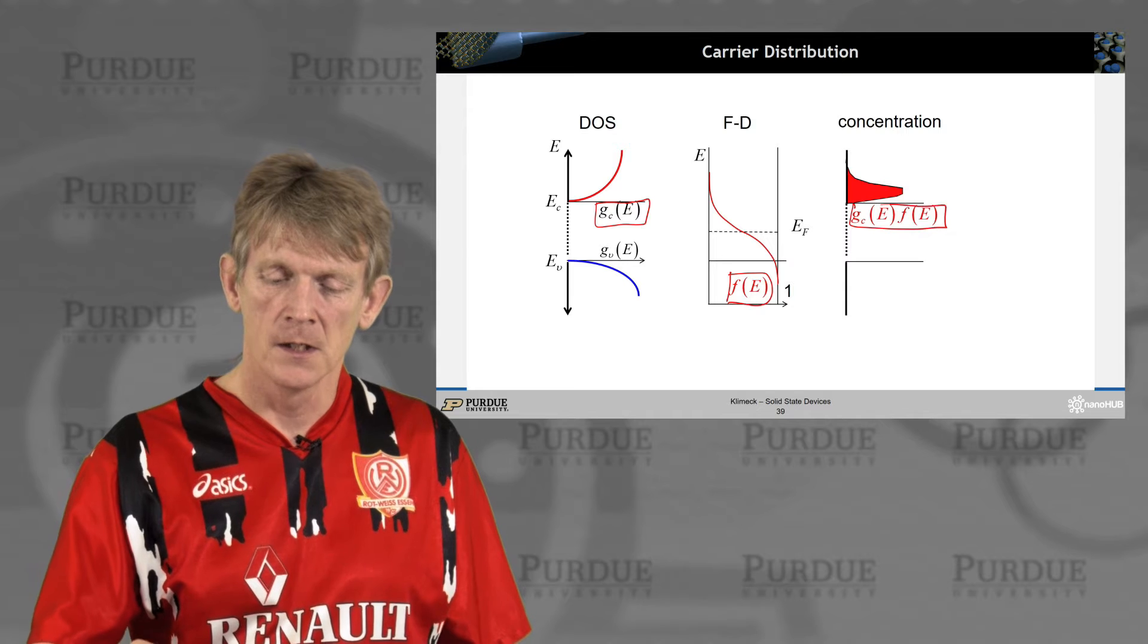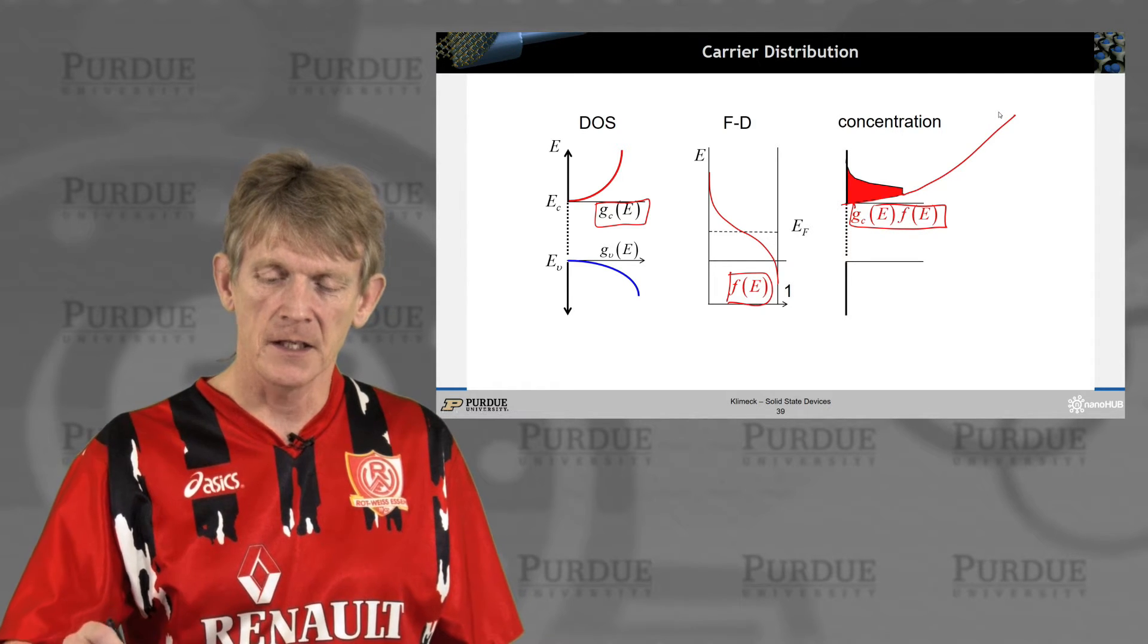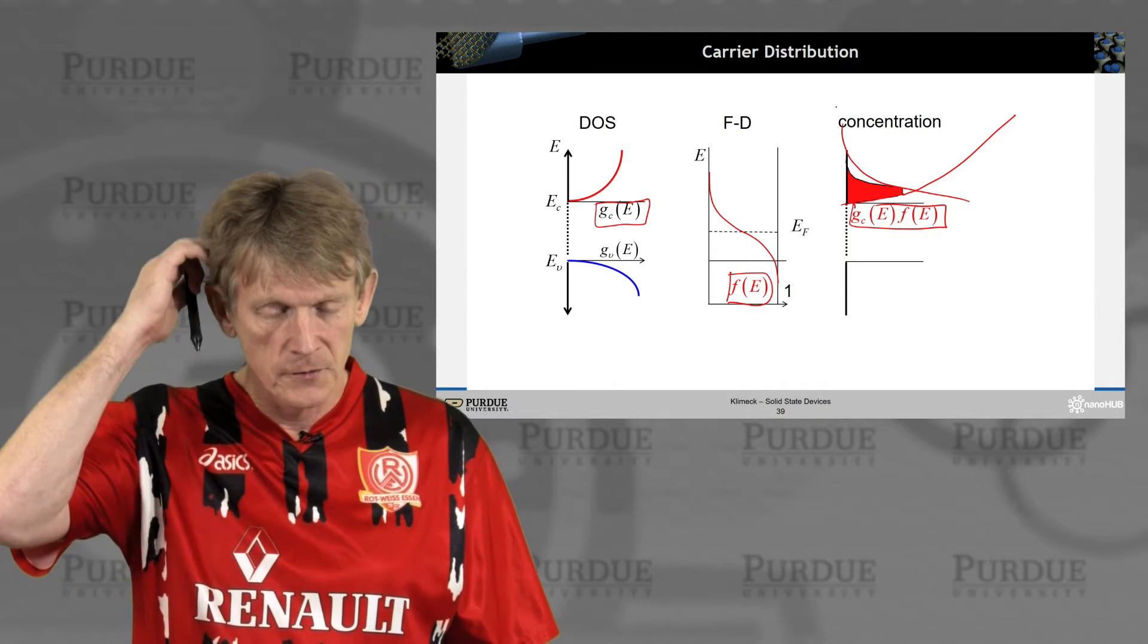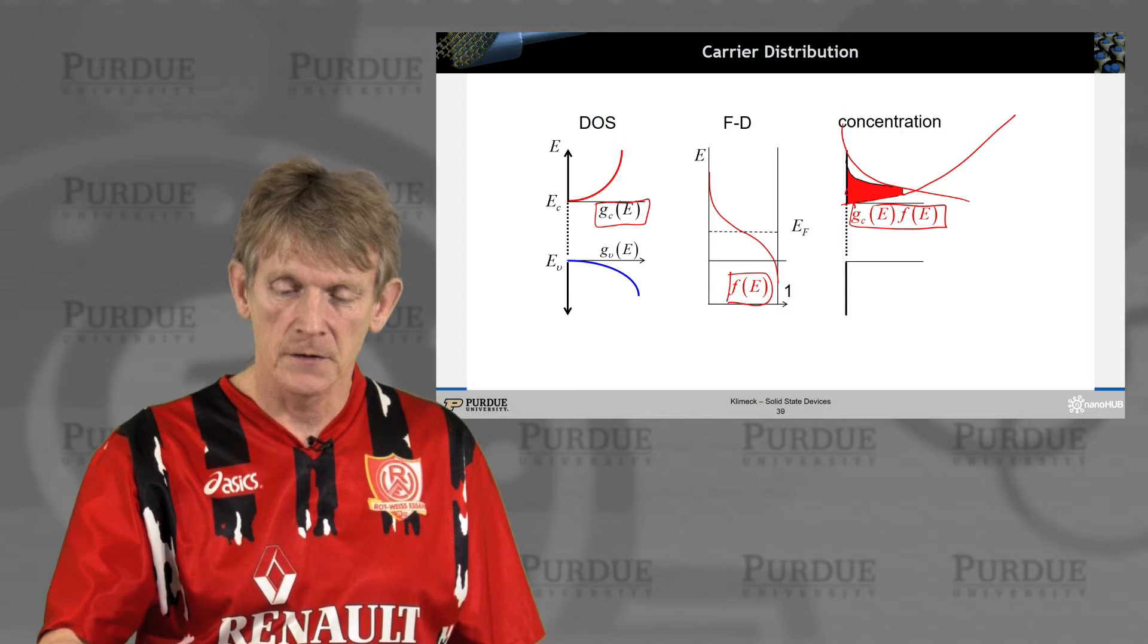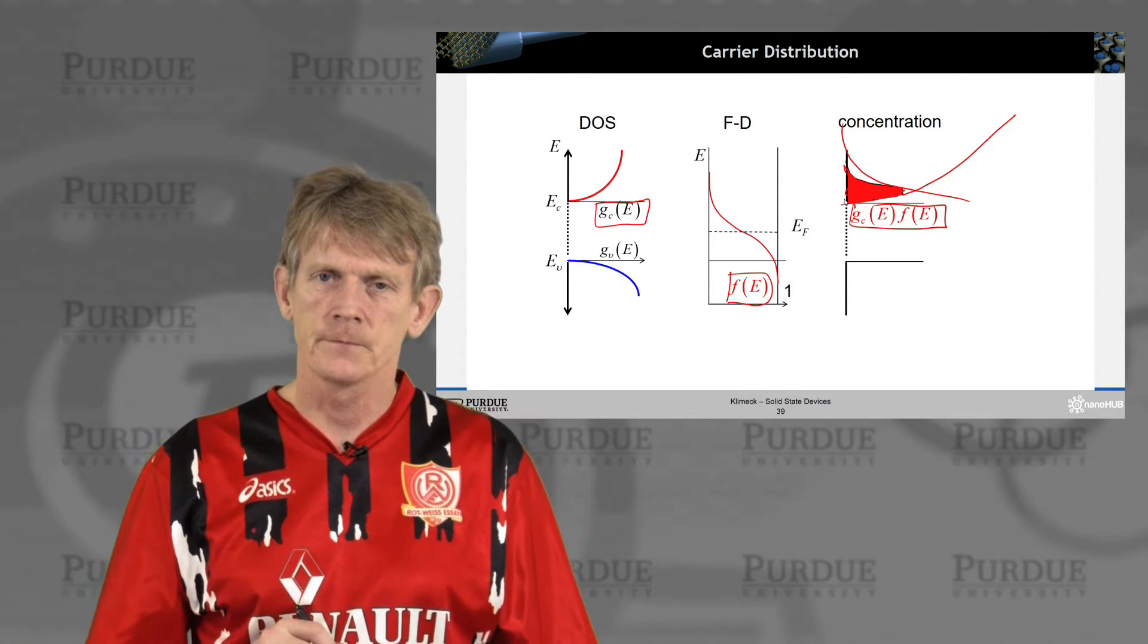And that gives you a rising component, like the density of states, that is multiplied by a decaying solution from the Fermi function. So, then you fill in a number of electrons here in red.